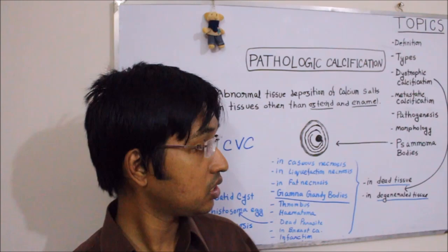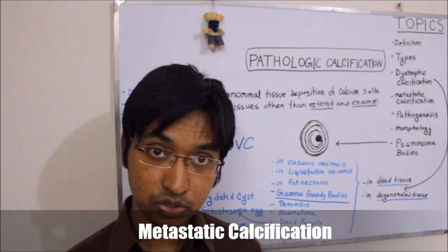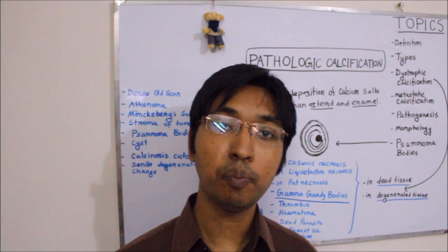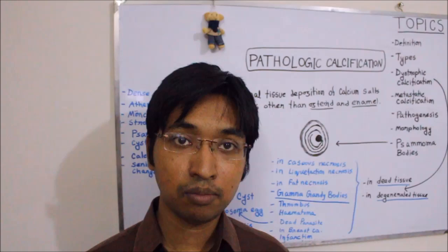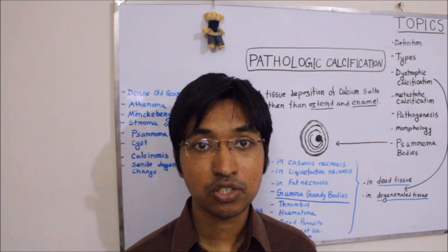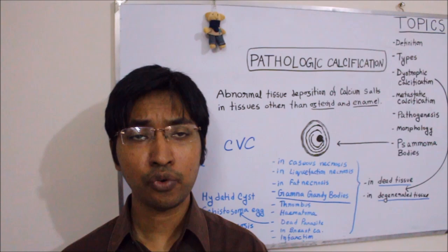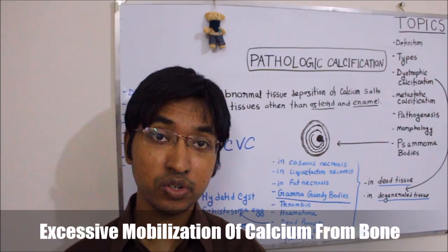Now we will move on and discuss metastatic calcification. Recall that in metastatic calcification, it happens in normal and living tissue and the serum calcium level is high. That means it can happen by one of two mechanisms: one mechanism is that calcium resorption from the bone may be abnormally high, and the second mechanism is that there may be increased absorption of calcium from the intestine.